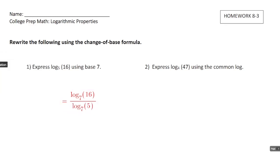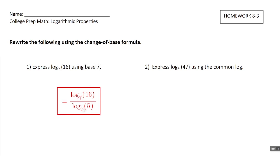So we're going to write this as log base 7 of 16 divided by log base 7 of 5. In general, to change the base using this formula, you write it as a fraction. You use the requested base in both numerator and denominator — the original argument goes in the numerator's log, and the original base goes in the denominator's log. So now we've converted this expression to one with log base 7.